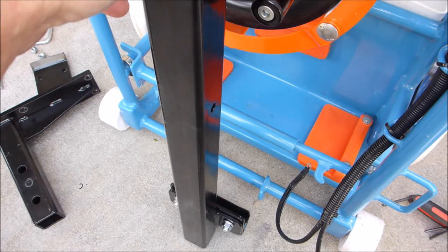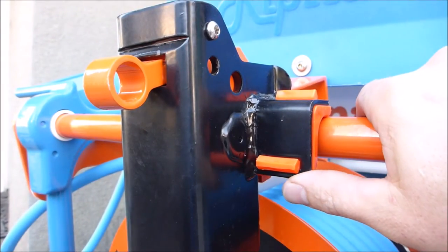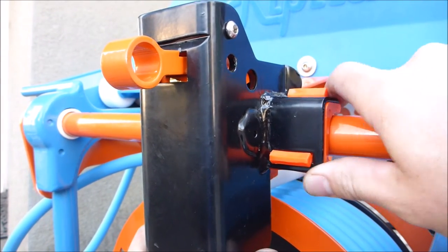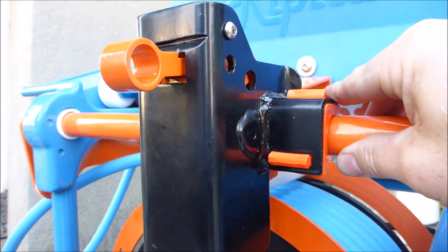First thing you want to do is get the locking mechanism set at the right height. Now you want to slide this part on here until it sets right on here. Now we can tighten those bolts. We know this is the right place.